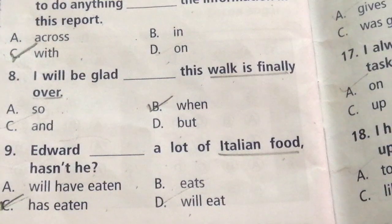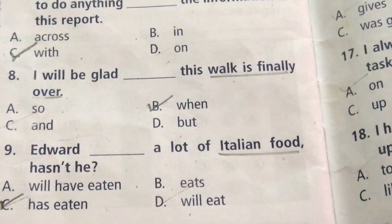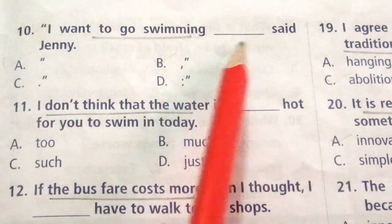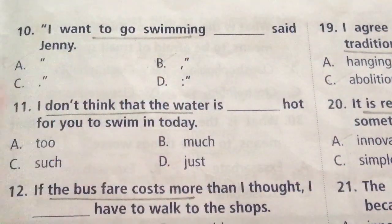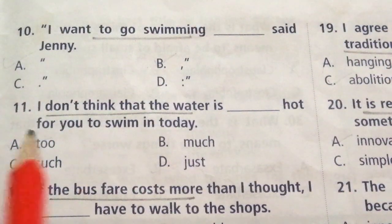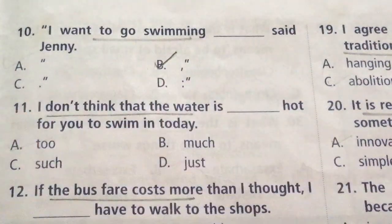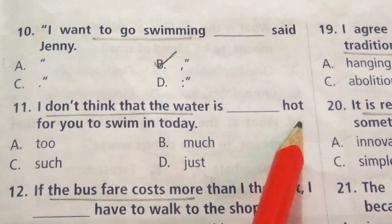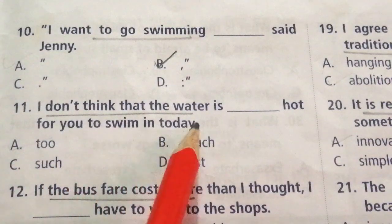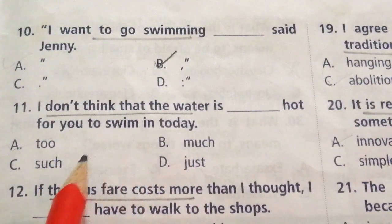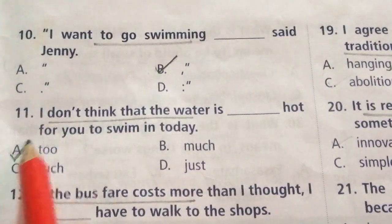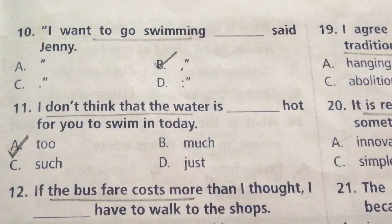Question 10: I want to go swimming, dash said Jenny. The answer is B. Question 11: I don't think that the water is dash hot for you to swim in today. The options are: too, much, such, just. The answer is A: too. I don't think that the water is too hot for you to swim in today.